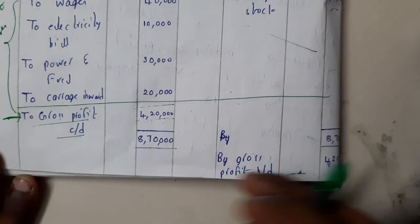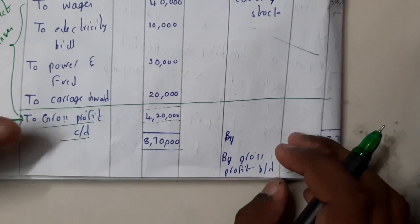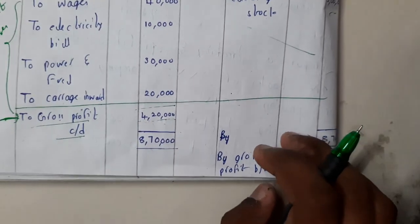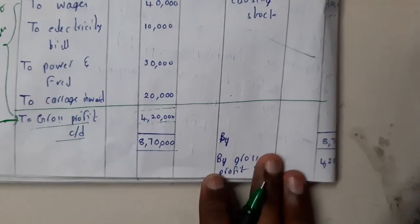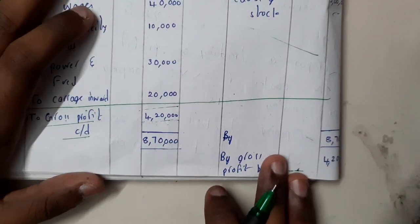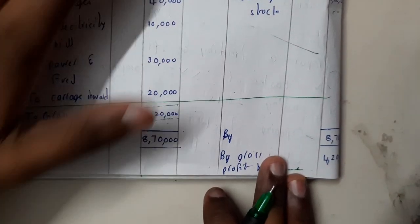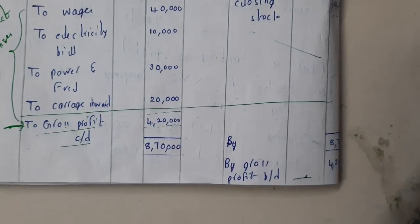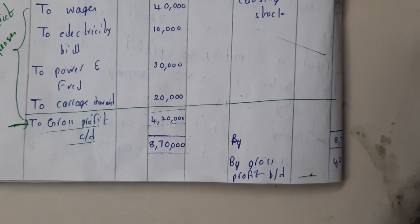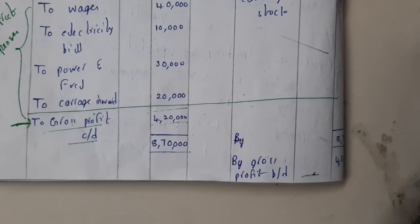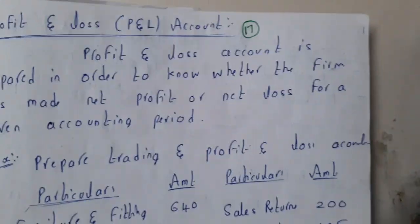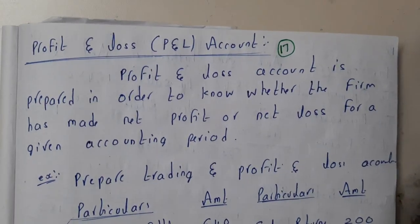We are done with one-third of the final account problem. I hope everyone is clear. Try any practice problems from your classwork. In the next lecture we'll go through the profit and loss account. Thank you for watching!